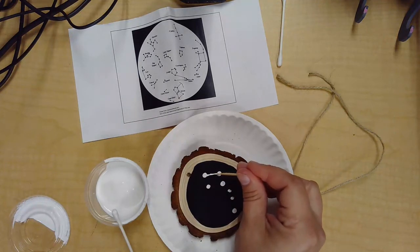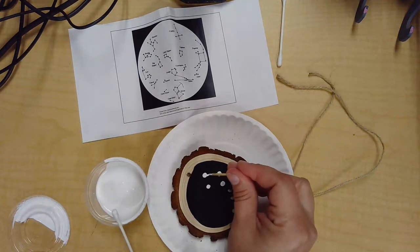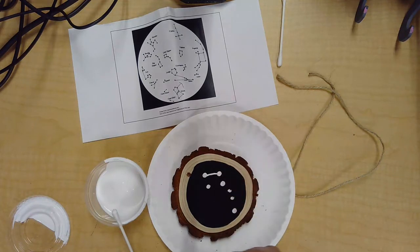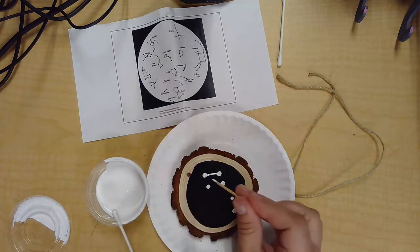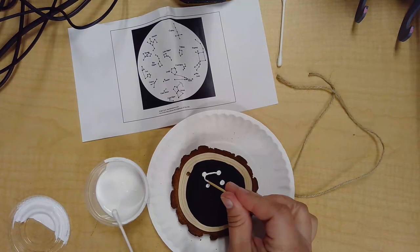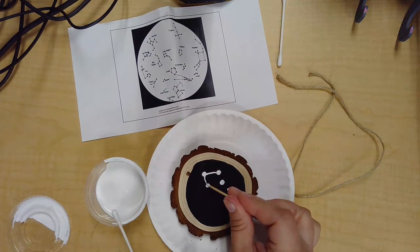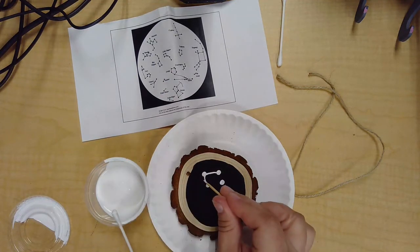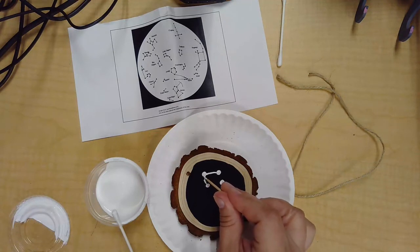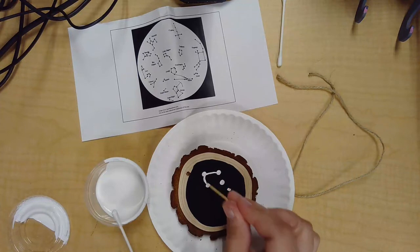If you make a mistake with these and you don't like how it comes out, you can always paint over it again with the black paint and start over. You just have to be patient. It can be a little tricky to paint a straight line with a toothpick.